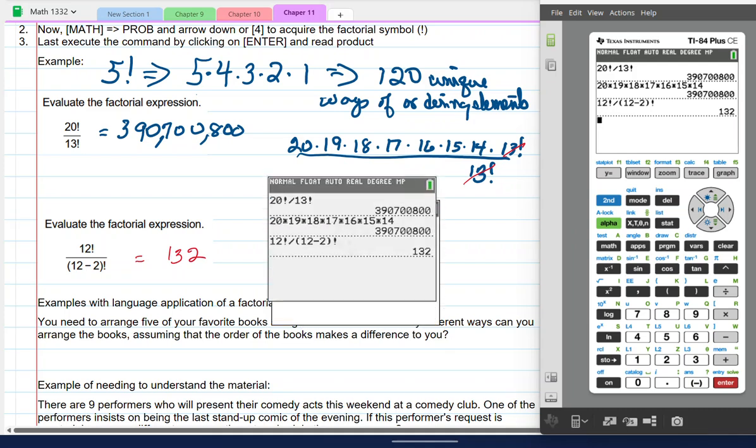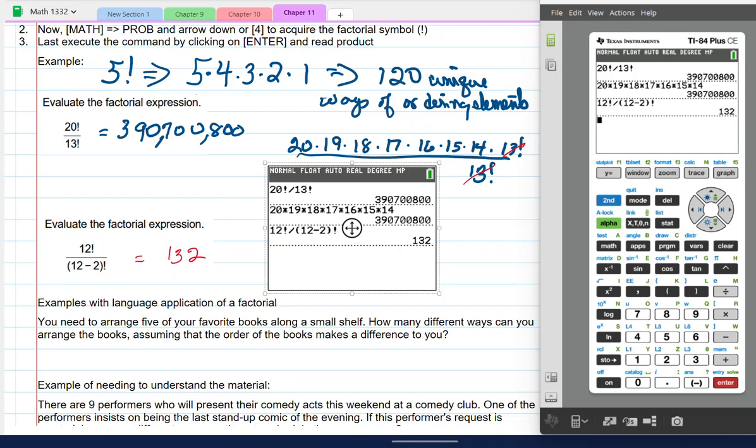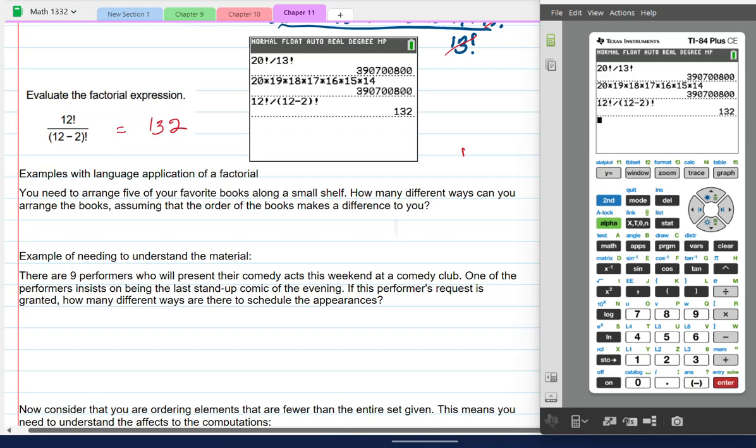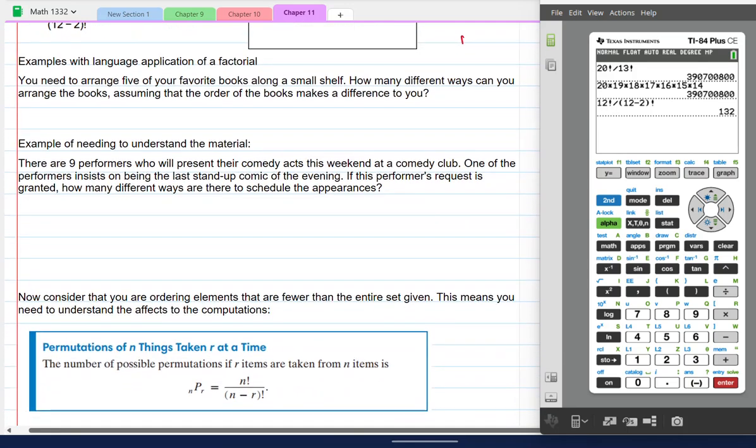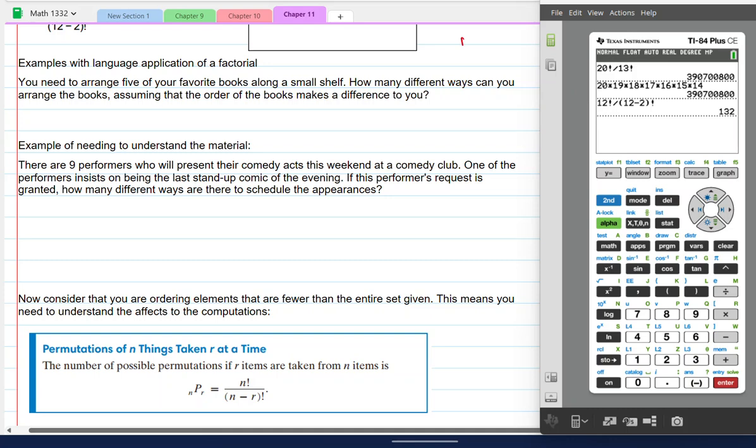So now we're going to do language and see what we can get to. Examples with language application of a factorial. You need to arrange five of your favorite books along a shelf. How many different ways can you arrange the books, assuming the order of books makes a difference to you? So that would definitely be the five factorial. And five factorial. And we know that's 120.